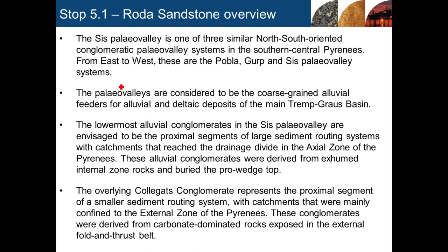The composition of the clasts within the Oligocene conglomerates indicates that erosion was taking place in the axial zone — we're seeing Carboniferous and metamorphic rocks being exhumed, with the erosional products transported through the Paleo Valley. There's an overlying unit, the Collagats conglomerate, which overlies the Cis conglomerate and has a clast composition indicating sourcing from the external zone of the Pyrenees — so we're seeing reworking of Cretaceous and early Tertiary rocks rather than metamorphic rocks, giving us provenance for those conglomerates.